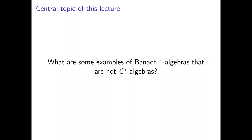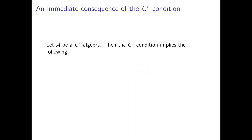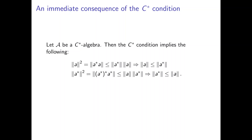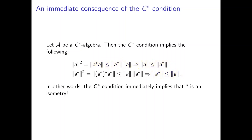To begin, I want to discuss one immediate consequence of the C-star condition to show its strength. If we have a C-star algebra, the C-star condition implies that the norm of a squared equals the norm of a-star times a, which by the submultiplicative property is less than or equal to the norm of a-star times the norm of a, implying the norm of a is less than or equal to the norm of a-star. Playing the same game for a-star gives the reverse inequality, so the C-star condition immediately implies that the star operator is an isometry.